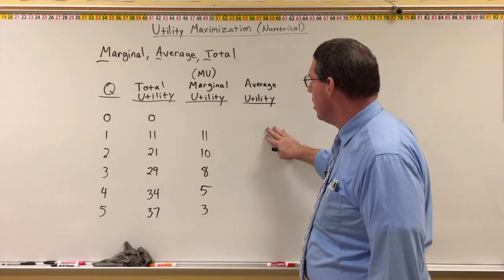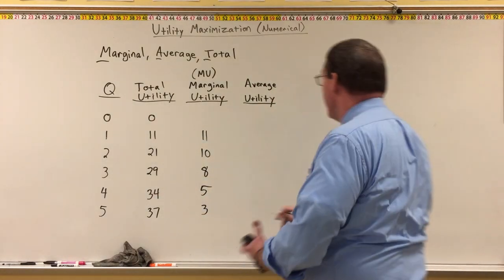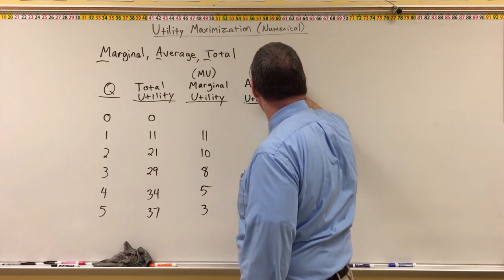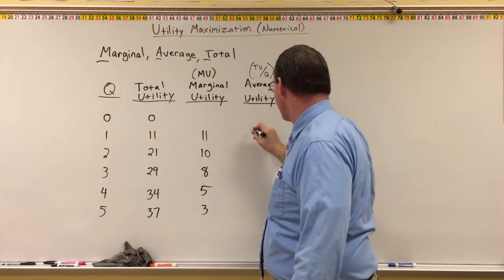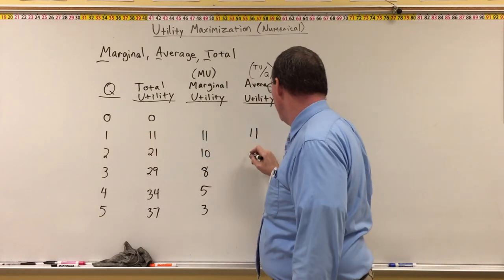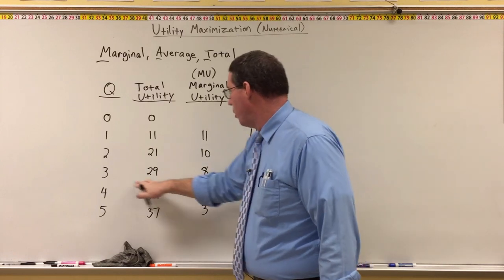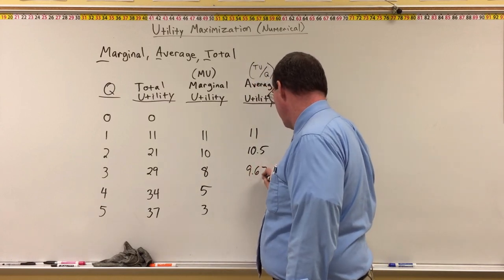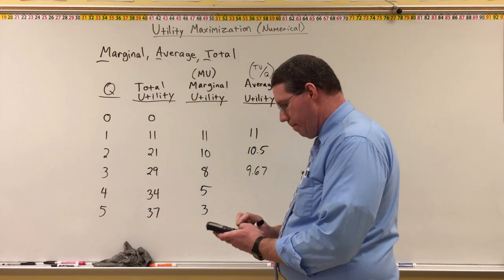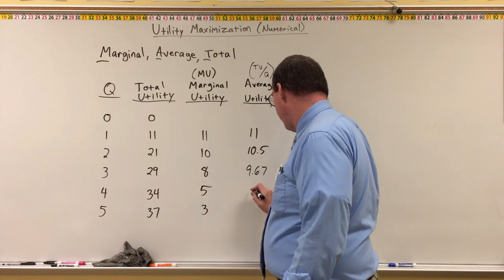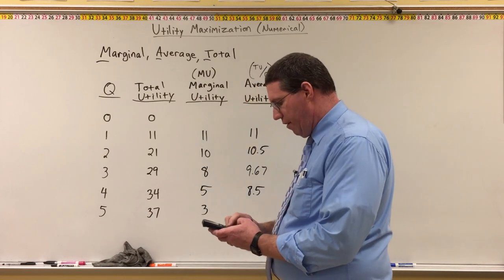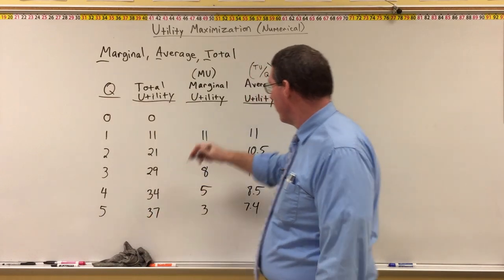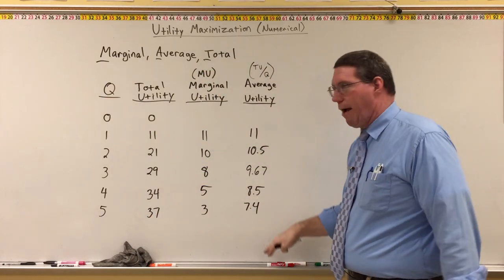Now to do the average utility, we do total utility divided by quantity. 11 divided by 1 is 11. 21 divided by 2 is 10.5. 29 divided by 3 is 9.67. 34 divided by 4 is 8.5. And 37 divided by 5 is 7.4. Given total utility and quantity, we were able to calculate marginal utility and average utility.